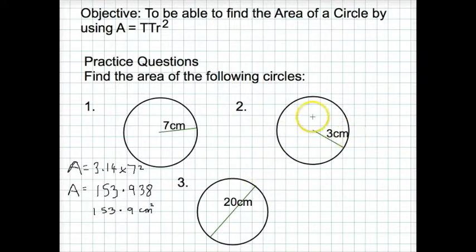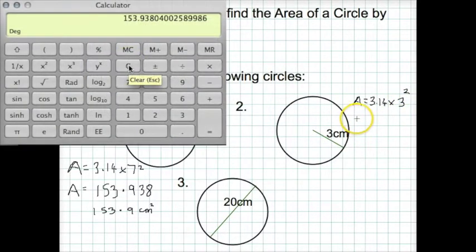Question 2 then. Exactly the same procedure. This time we type in π, 3.14, times the radius of 3 squared. Type that in your calculator.